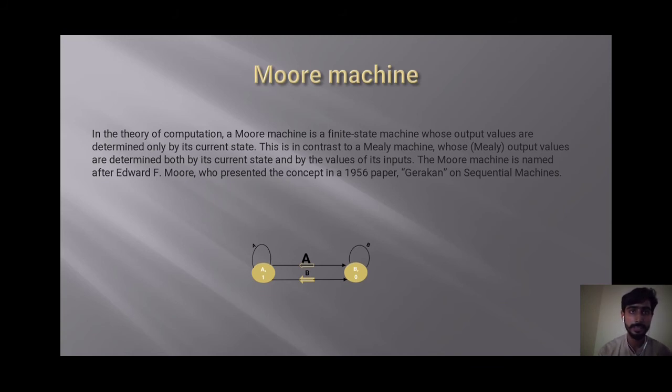Moore machine. In the theory of computation, a Moore machine is a finite-state machine whose output values are determined only by its current state. This is in contrast to a Mealy machine whose output values are determined both by its current state and by the values of its inputs. The Moore machine is named after Edward F. Moore who presented the concept in a 1956 paper.